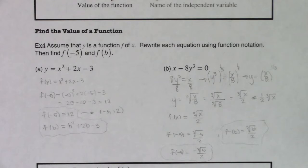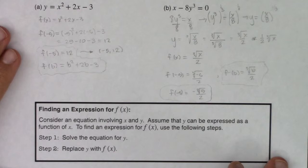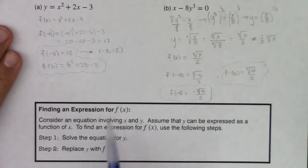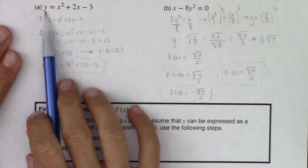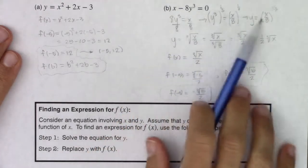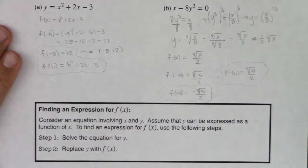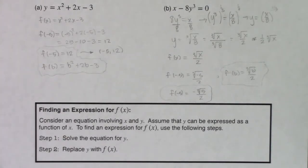With that we're going to flip the page and we're going to practice this function notation just a little bit more. Before we do that just let me read this last box. If I ever want to find an expression for f of x, if you have an equation involving x and y assume that y can be expressed as a function of x. To find an expression for f of x use the following steps. Solve the equation for y and then replace y with f of x. That's what we did in both of these cases. In part a or example a the equation already was solved for y. In part b it wasn't so I used a bunch of algebra. I got y all by itself and then I just rewrote it with f of x. Now we're going to go to the next page and we're going to practice some function notation. I'll see you in a few. Bye.